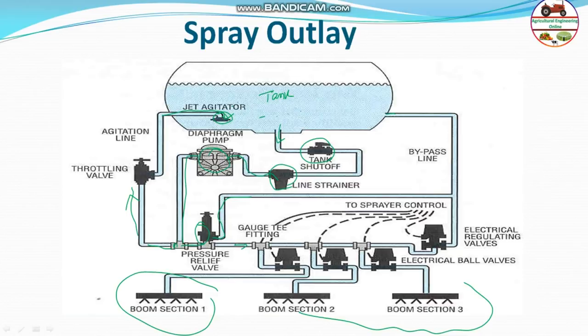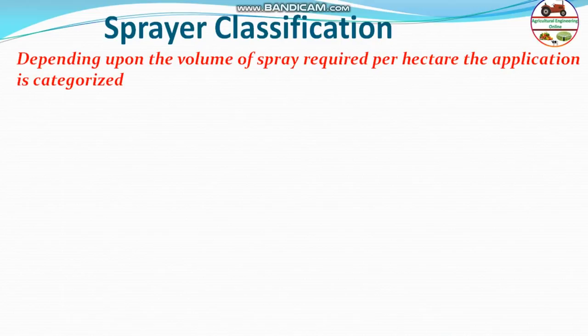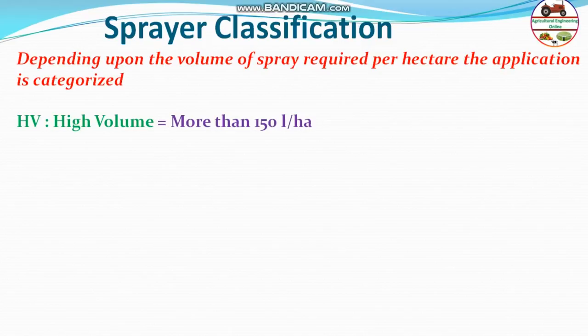Next is sprayer classification by volume of spray per hectare. High volume spray (HV) applies more than 150 liters per hectare of any crop type. Sprayers capable of handling this amount are called high volume sprayers. These are suitable for insecticides, fungicides, and herbicides — a wide variety of applications.